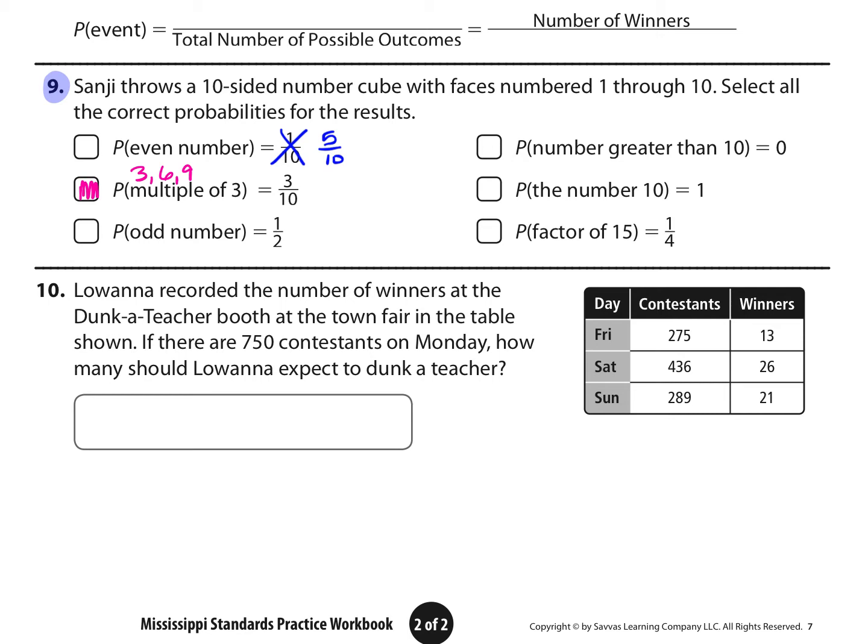The probability of an odd number is 1 half. Well, 5 or half of the 10 numbers are odd, which does reduce to 1 half, so that's true. The next one, the probability of a number greater than 10 is 0. Well, there are no numbers greater than 10, so that's true. The probability of the number 10 is 1. That's not true. It's 1 out of 10. And then the probability of a factor of 15 is 1 fourth. We have to think of what factors of 15 there are. We could multiply 3 and 5 to get 15, and that's it. So really, we have 2 out of the 10, which is 1 fifth, not 1 fourth, so that's not true.